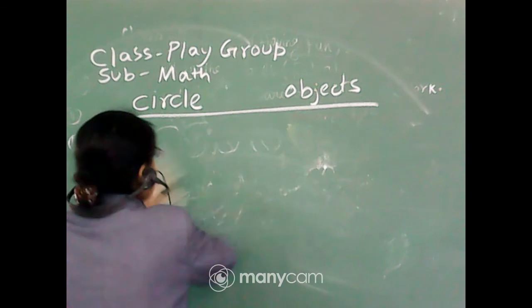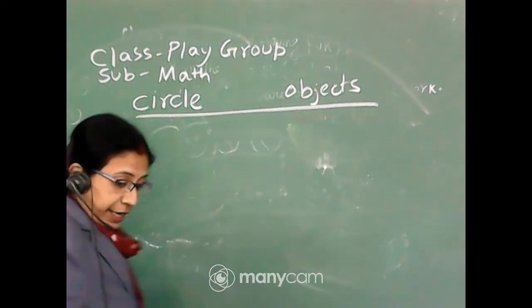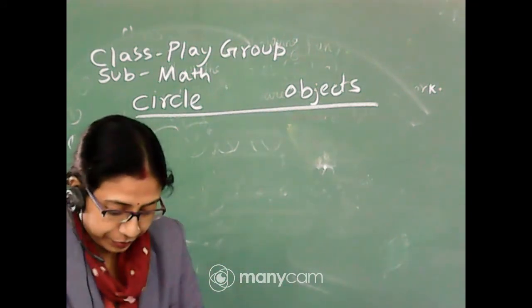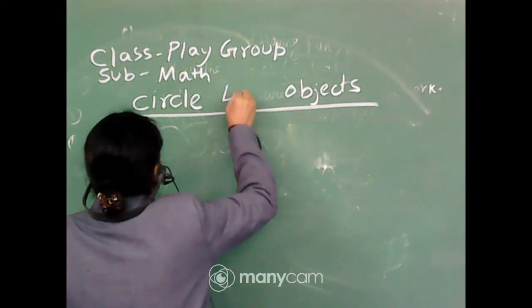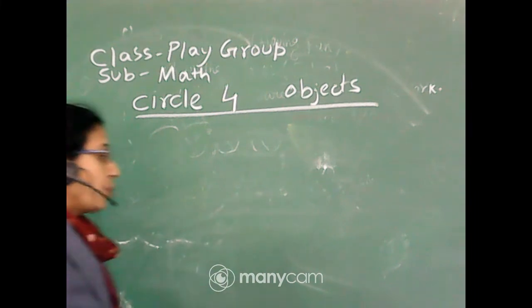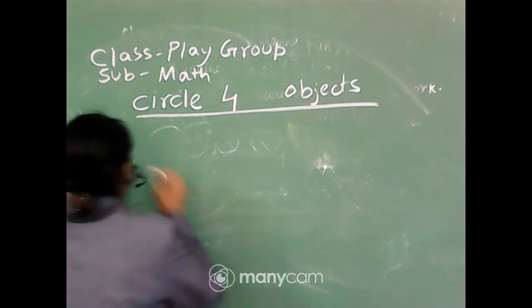Now we also change our heading: circle four objects. Four objects, okay?